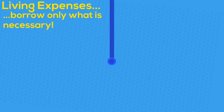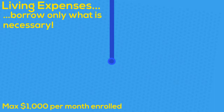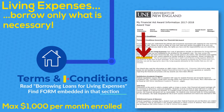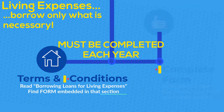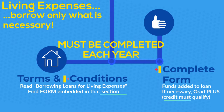Some students might need to borrow additional money for living expenses, which is fine if you're careful. You may borrow up to $1,000 per month you're enrolled. You can find the link for the living expenses form in the terms and conditions on UNLINE and must reapply every year. You must qualify for the Grad Plus loan if it's needed to increase your aid.